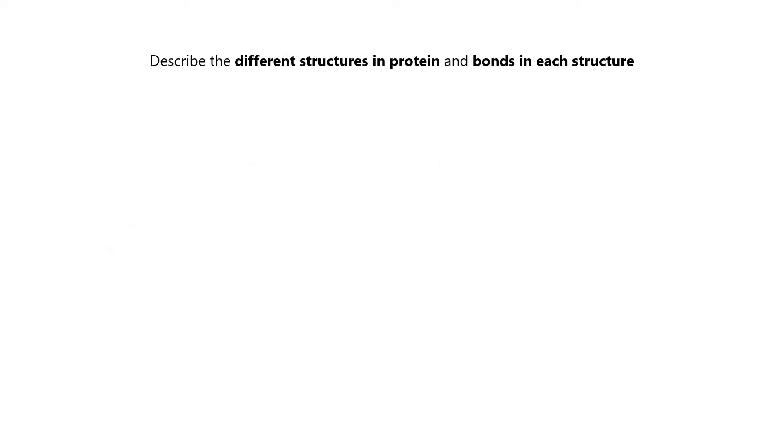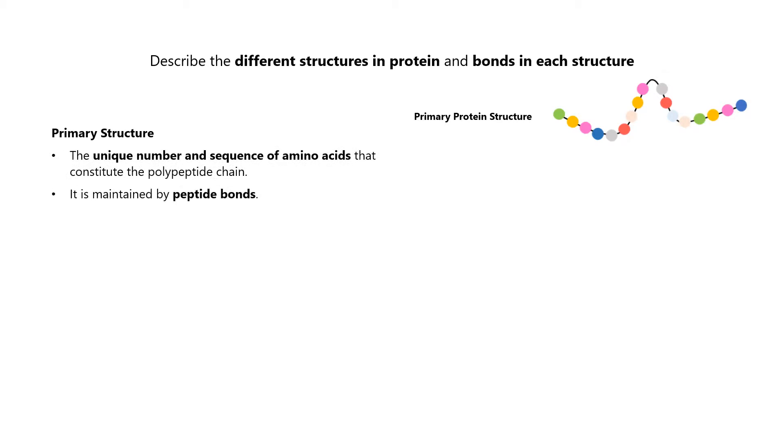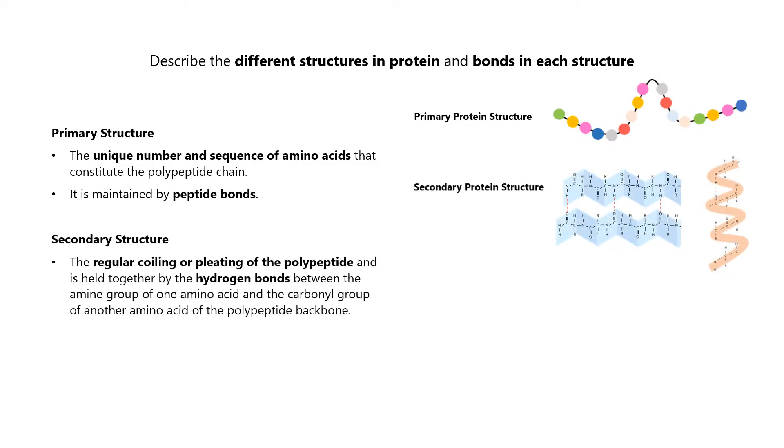The primary structure refers to the unique number and sequence of amino acids that constitute the polypeptide chain. The primary structure is maintained by peptide bonds.